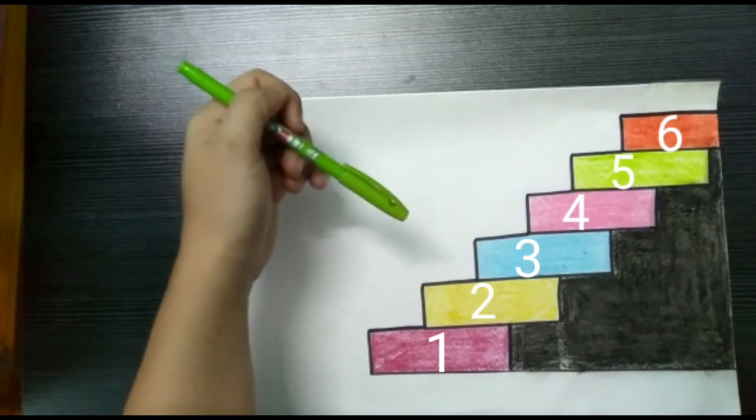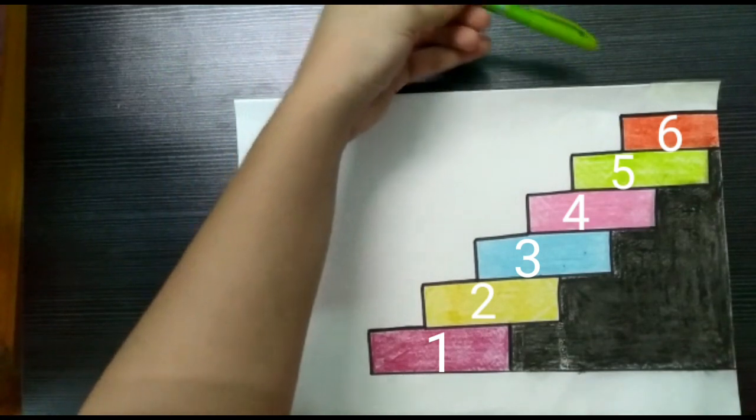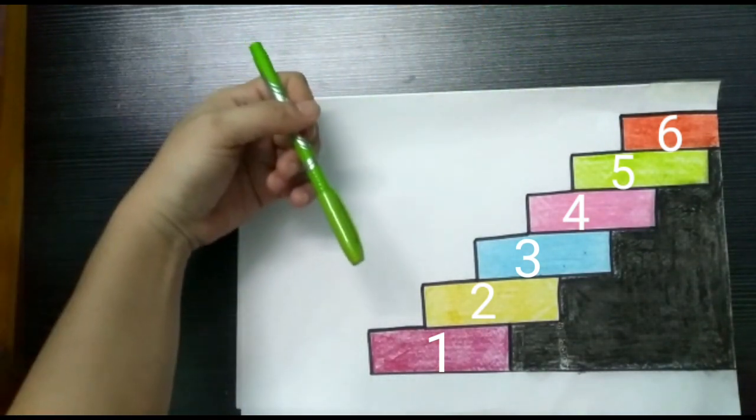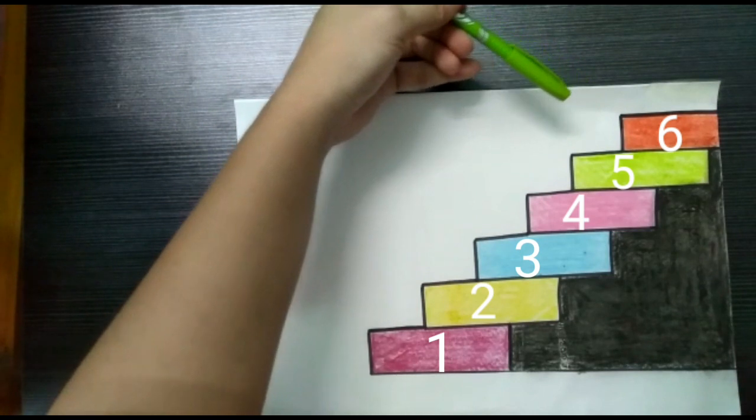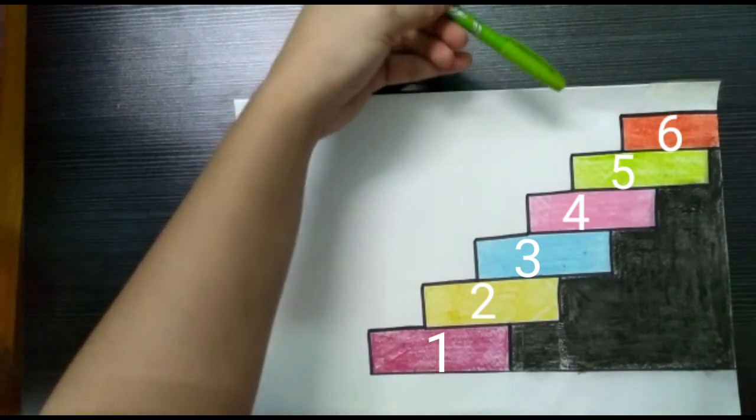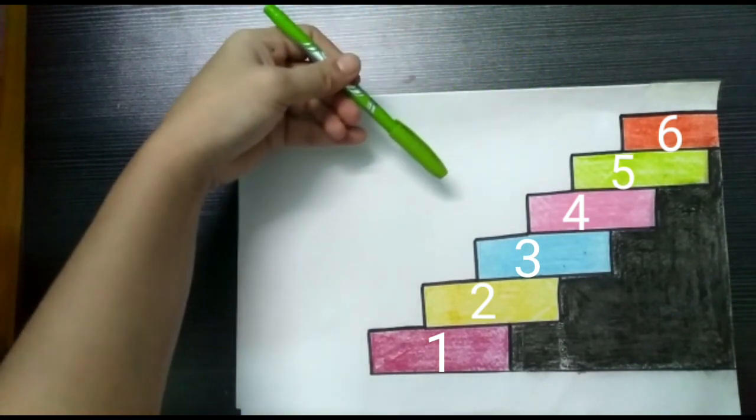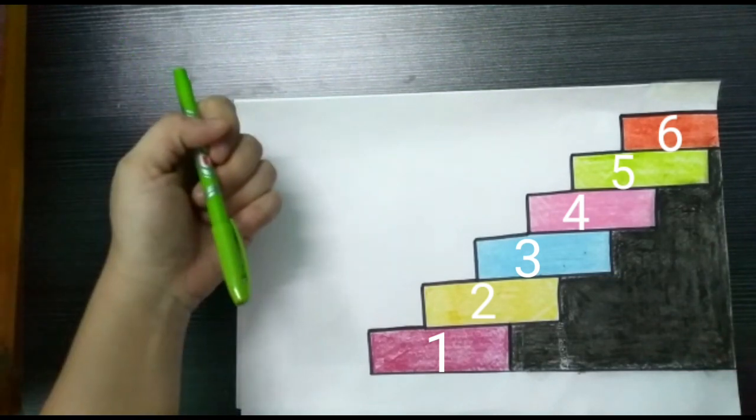In descending order, we move from upstairs to downstairs. Each number gets smaller than the previous number as it moves from upstairs to downstairs.